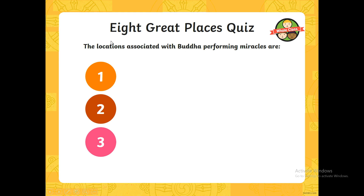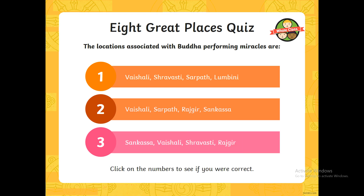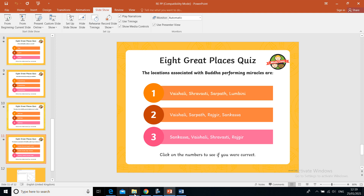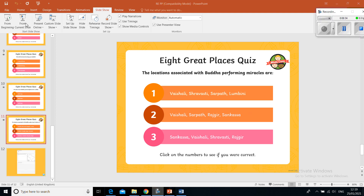And I think this is the last question. The locations associated with Buddha performing miracles are — was it these four places, these four places, or these four places? Really have a think about these. It may not have specifically said 'miracles' in the PowerPoint before, but it may have hinted at what would have been a miracle. It is in fact not the first, not the second, but the third option. Apologies for that pause, Year 5 — a question was asked of me.